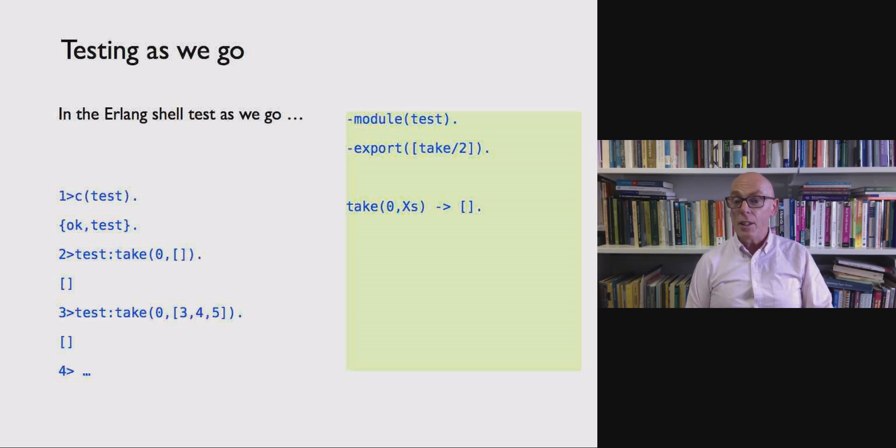The code we're testing is in the square at the right and what we do in the shell as we go we compile the program and we write some tests just to check that the program is doing what we would expect it to. And this is often what functional programmers do. What's unfortunate is we tend not to record those tests in our programs. So we do the testing as we do the development but then they get lost.